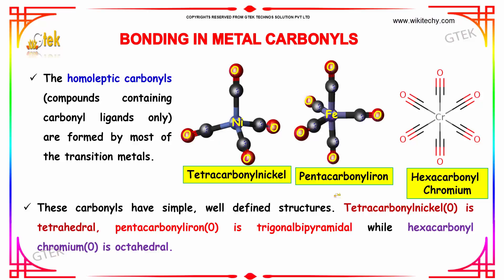Tetracarbonyl nickel is tetrahedral, pentacarbonyl iron is trigonal bipyramidal, while hexacarbonyl chromium is octahedral.